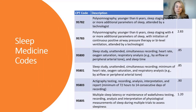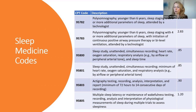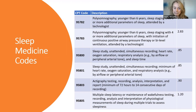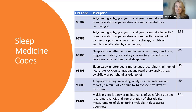We wanted to include some of the frequently used sleep medicine codes with associated relative work value units — work RVUs. You can see there are sleep medicine codes that are specific to age — for example, for children under the age of six — and sleep studies that are both unattended and attended, dependent on how many parameters are included in the test.